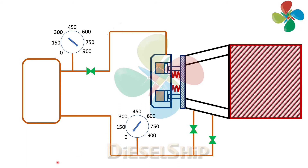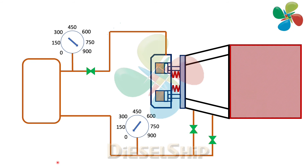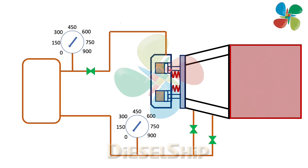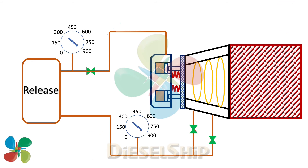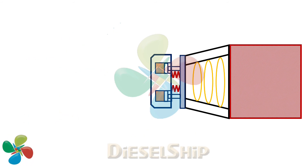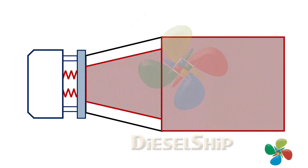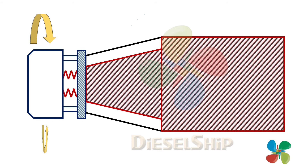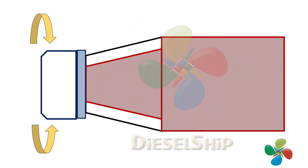Now we release the pressure from the top part — the pilgrim nut pressure is removed. This is how it will look. Then we manually turn the pilgrim nut clockwise to move it towards the propeller, and then the final end plate is attached manually.